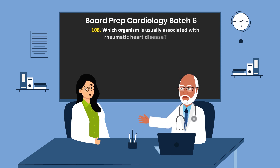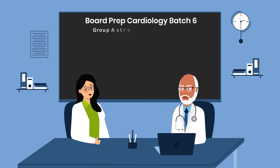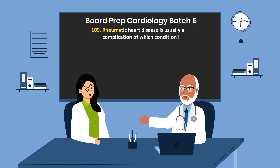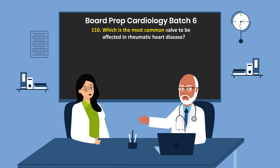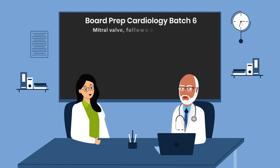Question 108. Which organism is usually associated with rheumatic heart disease? Question 109. Rheumatic heart disease is usually a complication of which condition? Streptococcal pharyngitis. Question 110. Which is the most common valve to be affected in rheumatic heart disease? The mitral valve is first, followed by the aortic valve.